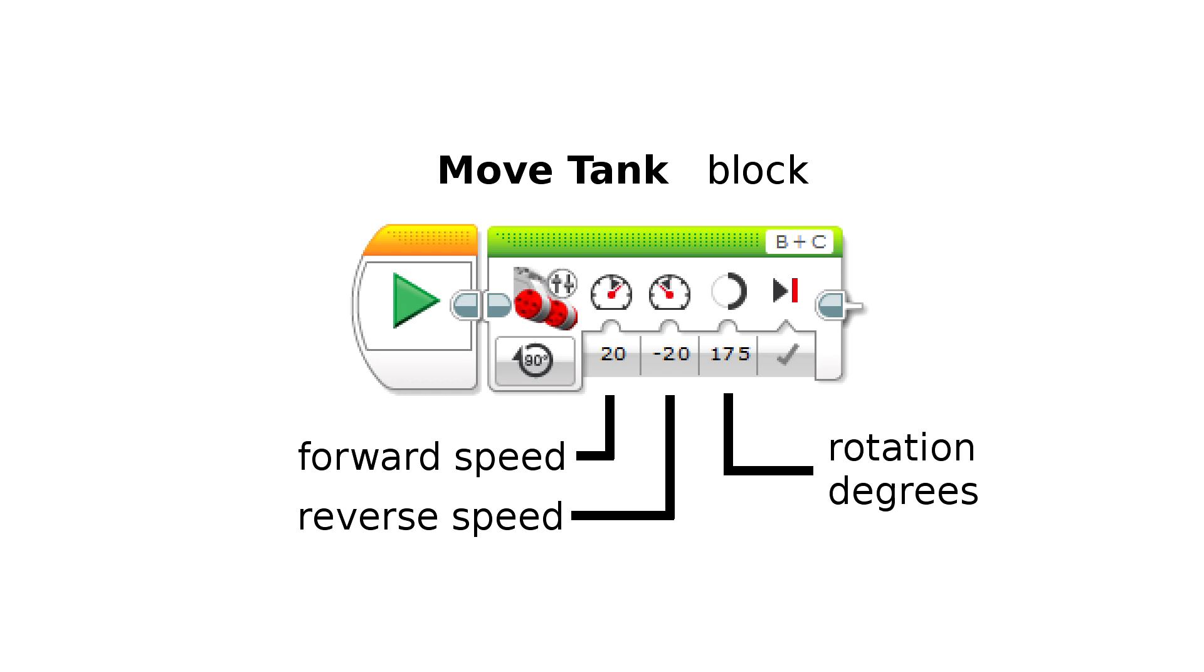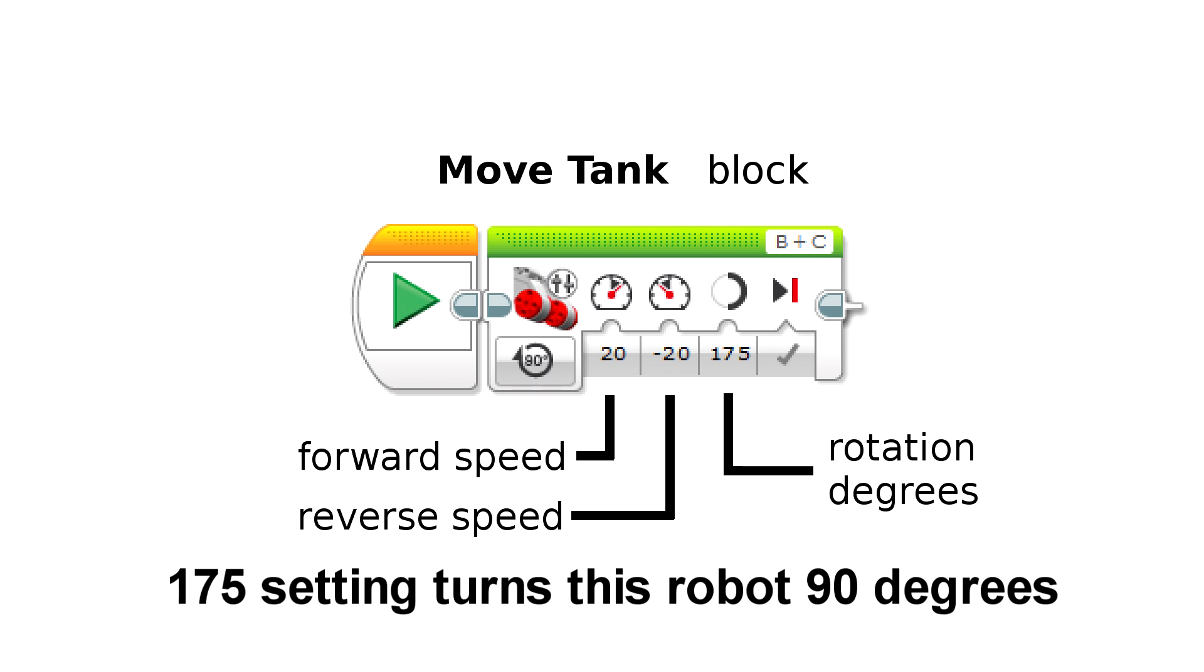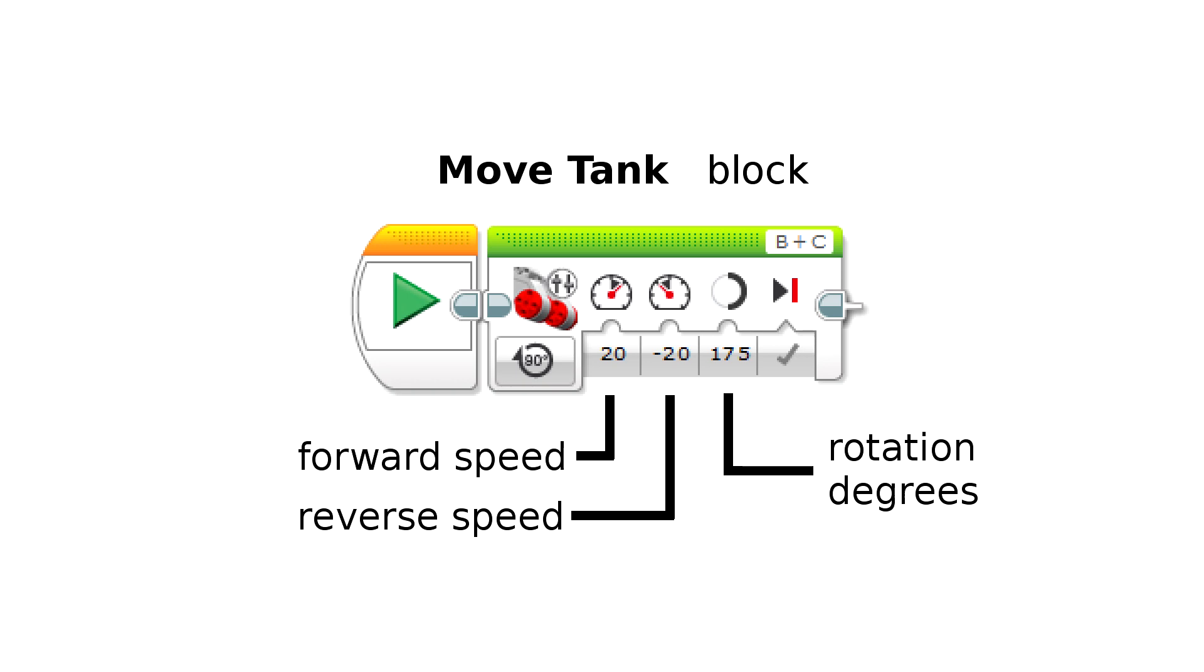In this case, one wheel turns forward 175 degrees, and the other wheel turns backwards by the same amount, and that causes this particular robot to spin around 90 degrees, so it ends up at a right angle to where it started.